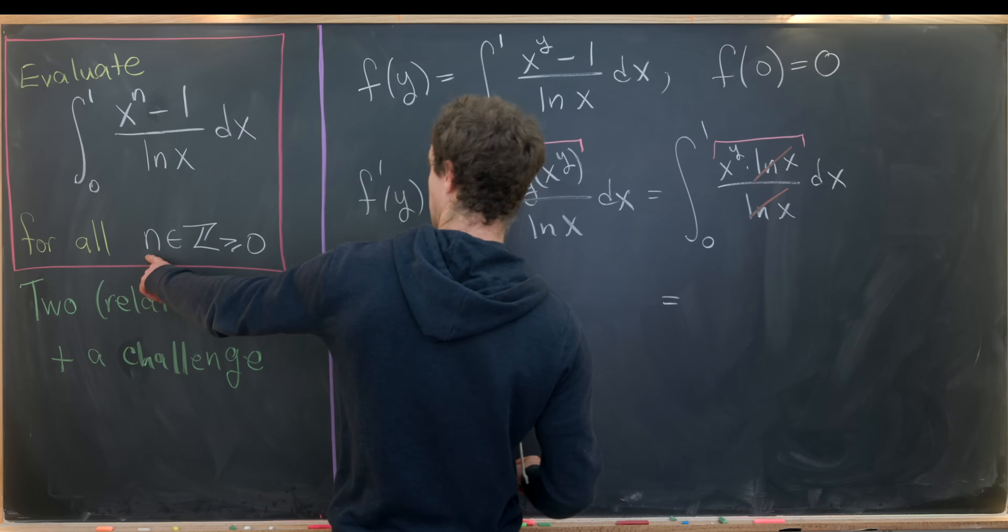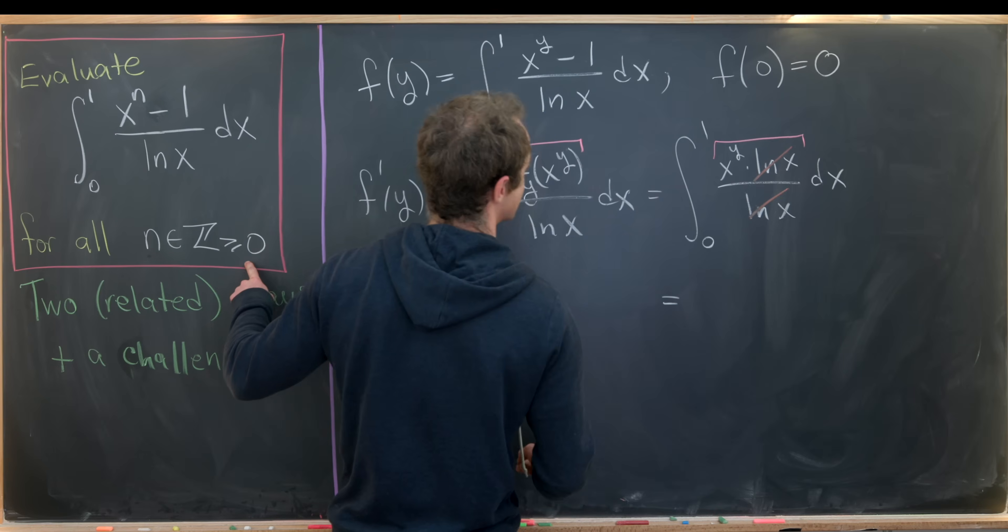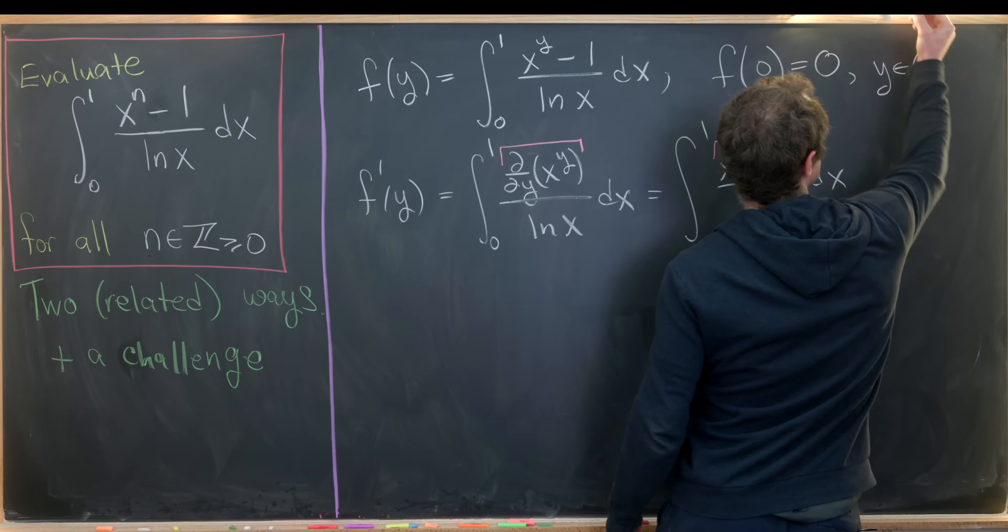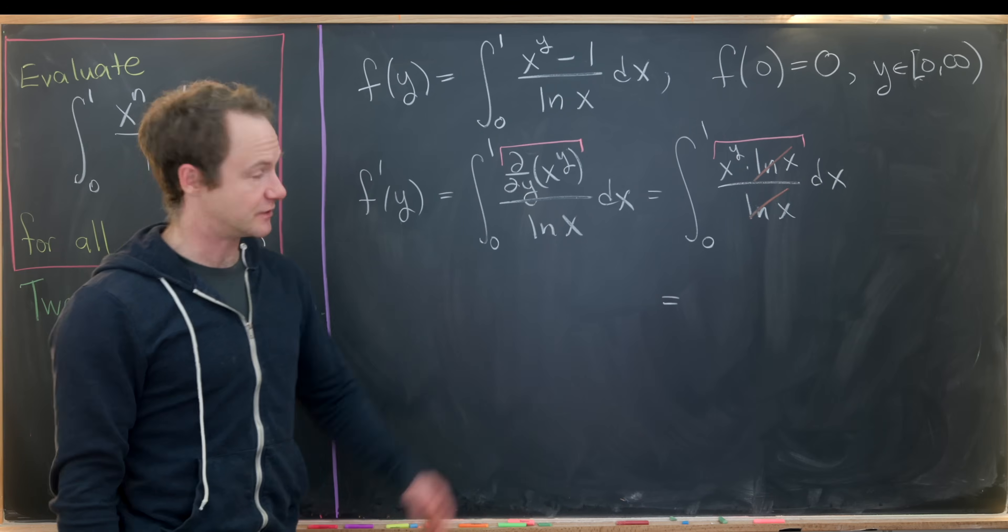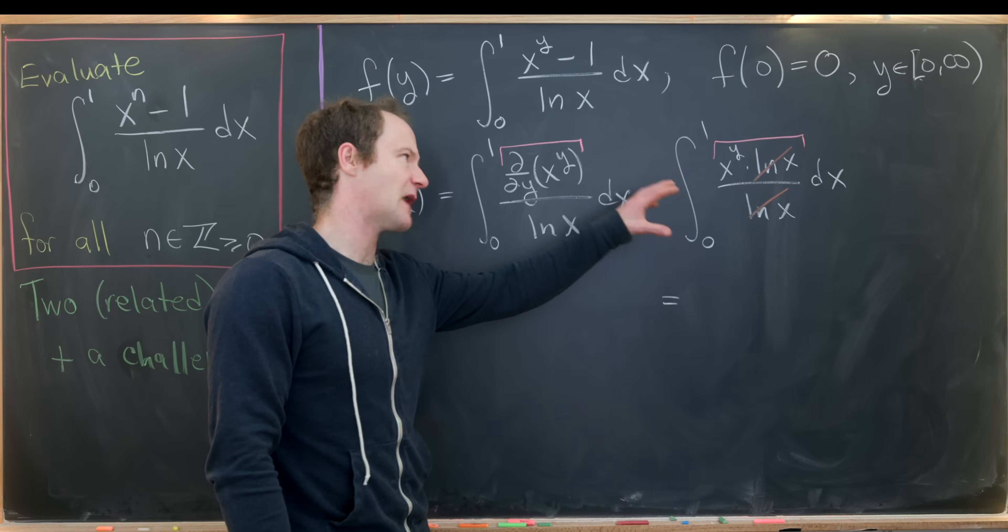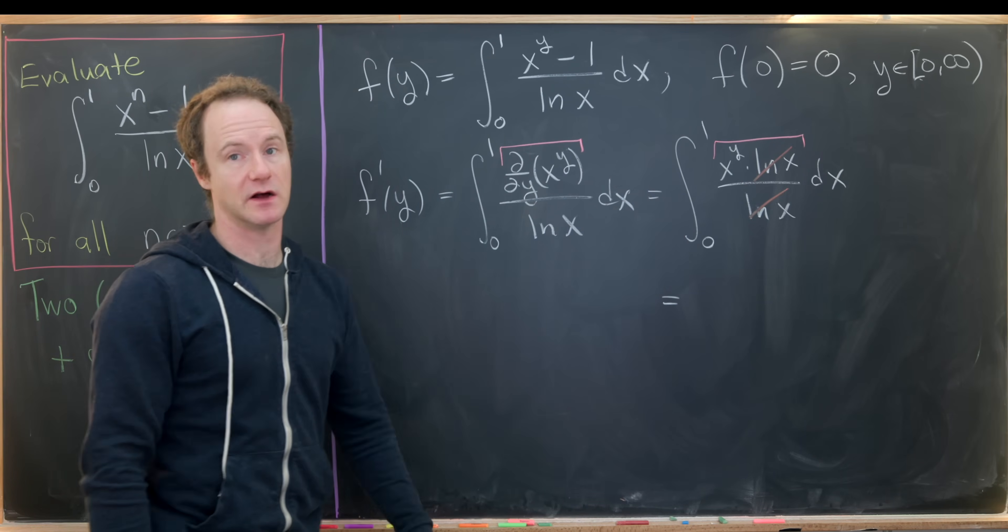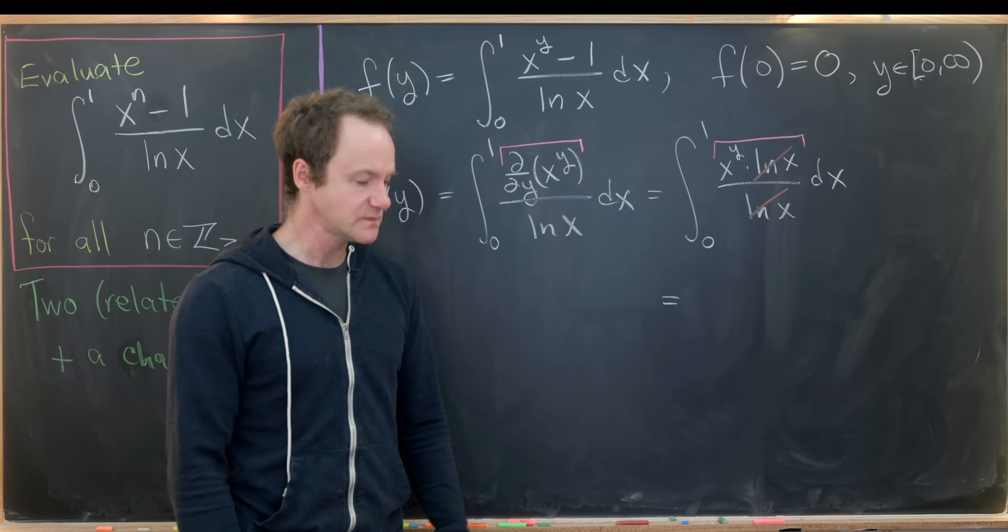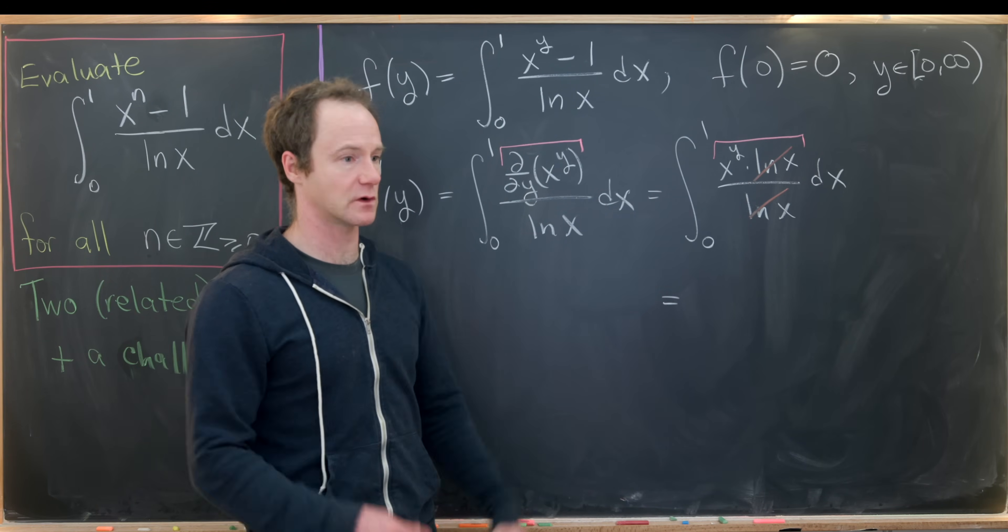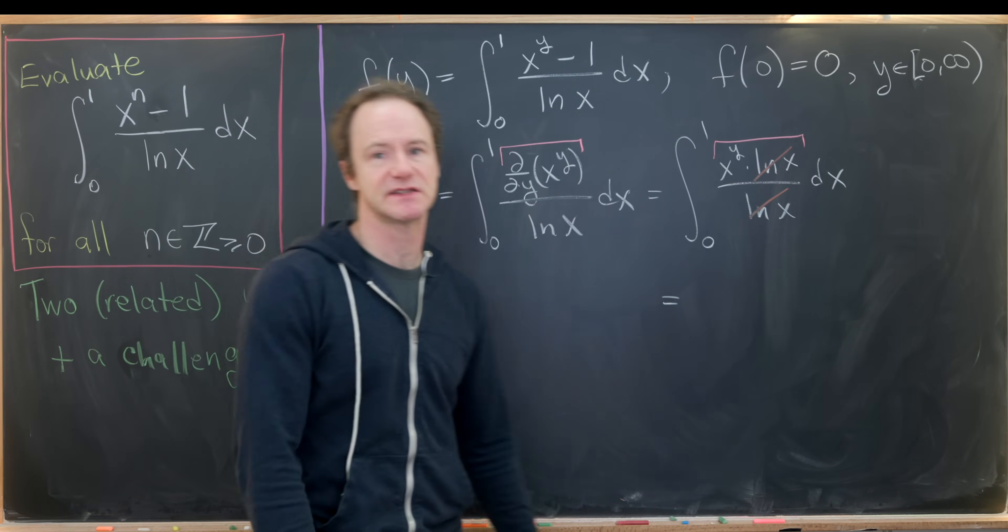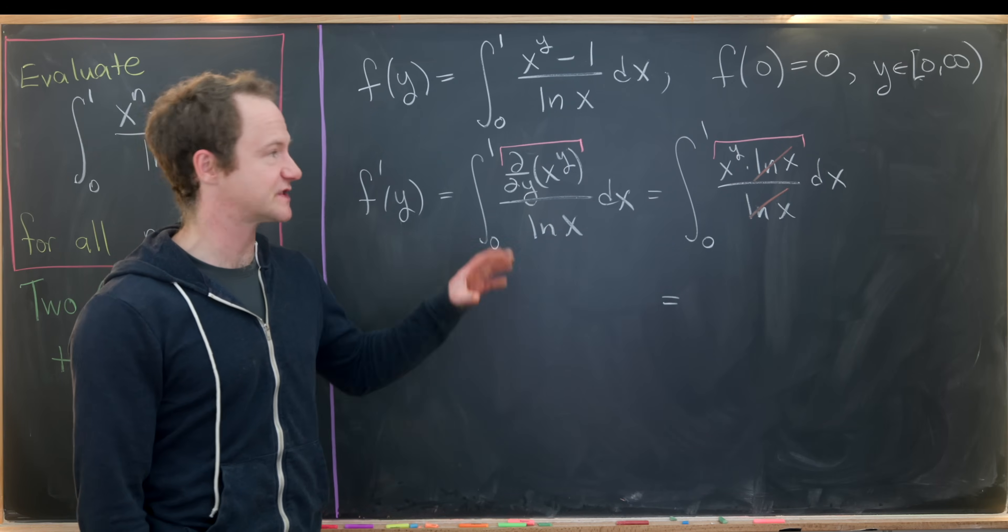But since our values of n should be bigger than or equal to 0, that means our values of y should also be bigger than or equal to 0. So I'll say this is the closed interval from 0 to infinity. Those are the values of y that we're interested in, meaning we can use the power rule. In fact, we can use the power rule almost everywhere. The only place we can't use the power rule is when y is equal to negative 1. So in fact, this would give us some sort of reasonable idea for the value of this for all integers n except for n equal negative 1. But we're just going to focus on this case.